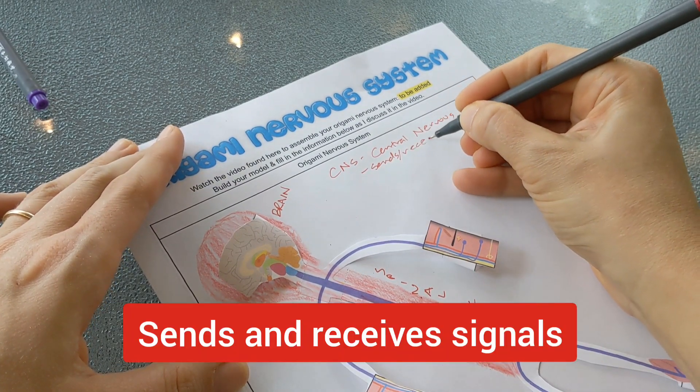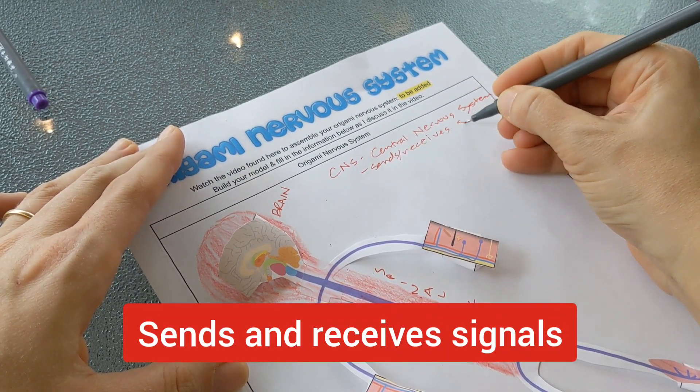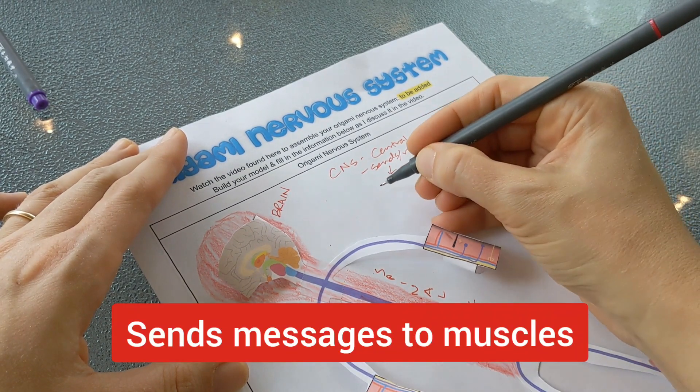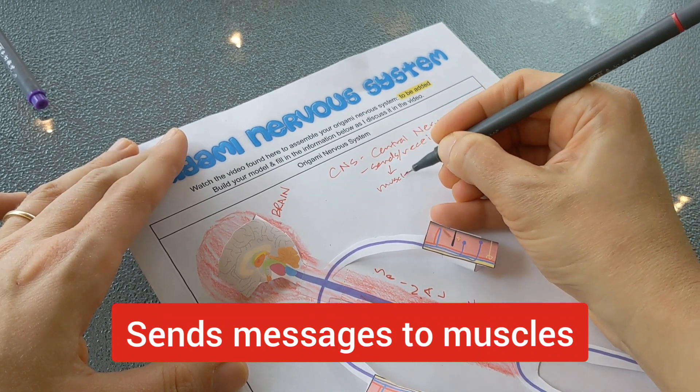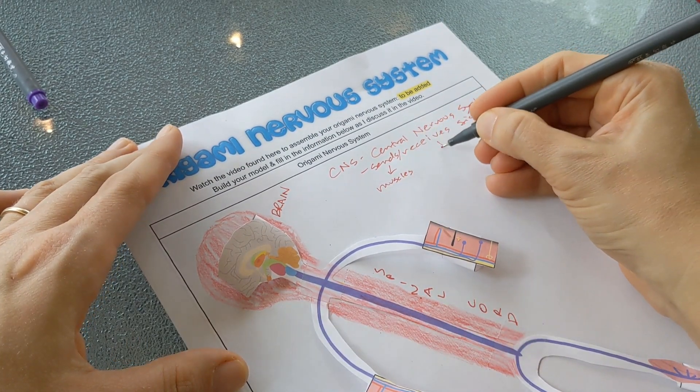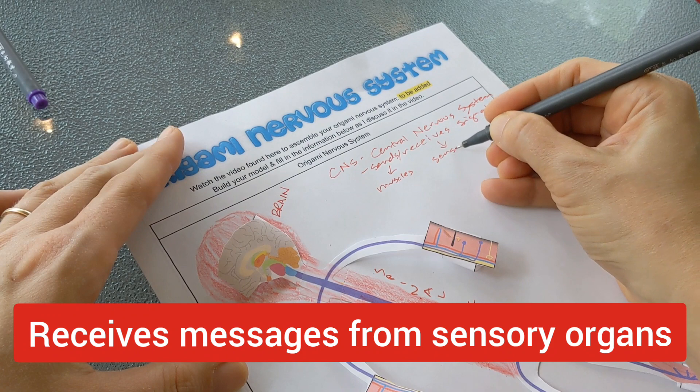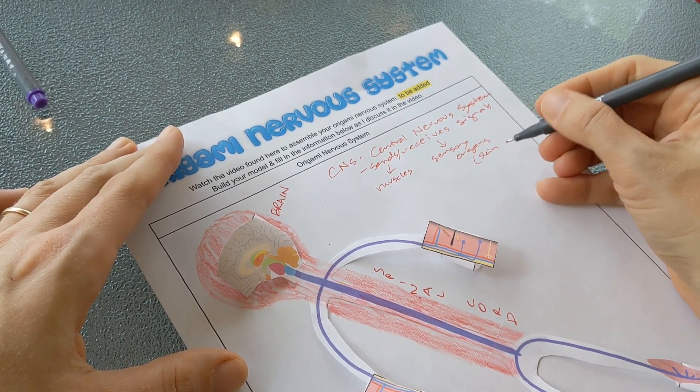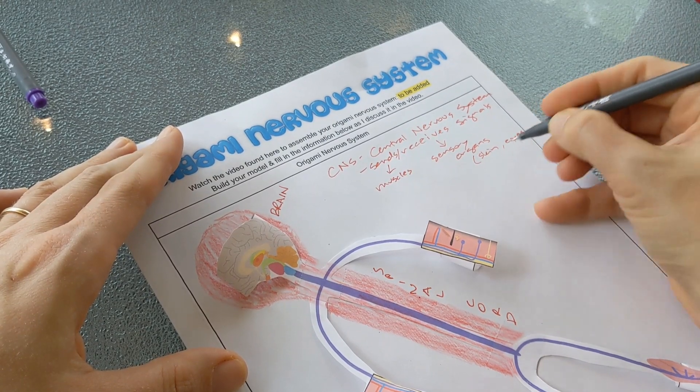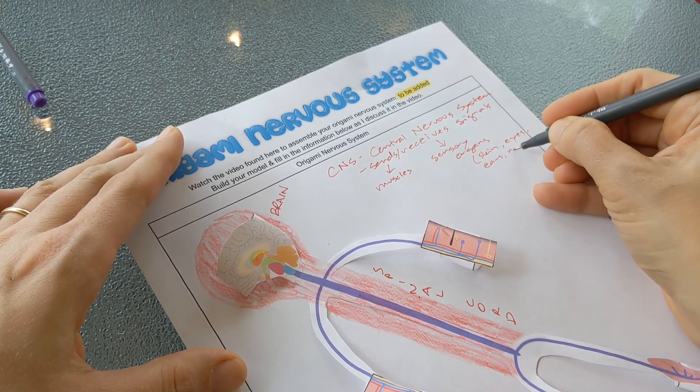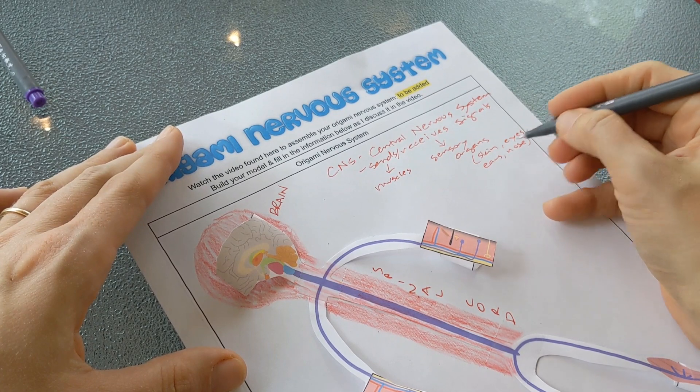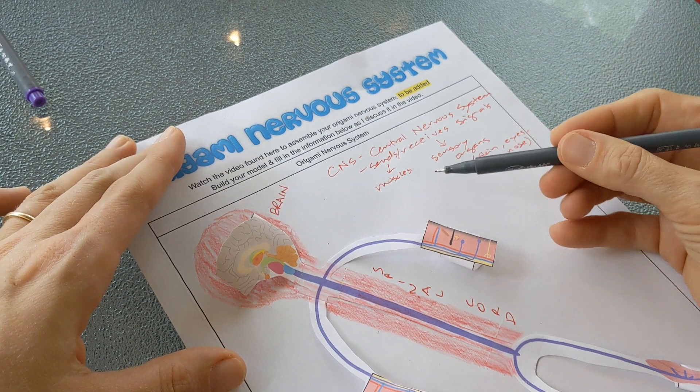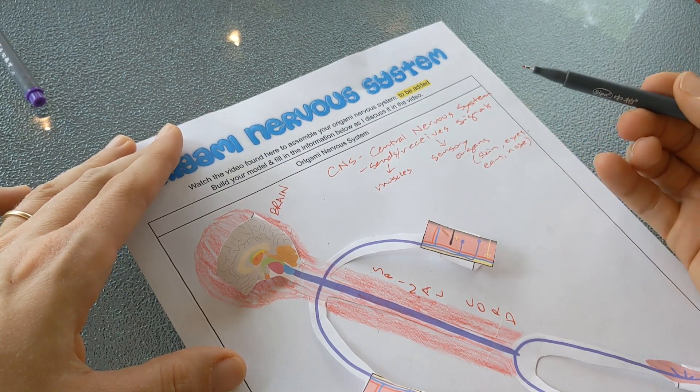It sends and receives signals, messages to the muscles, and it receives messages from sensory organs. These are things like the skin which we can see in the model, the eyes, the ears, the nose. All of our senses are going to go to the central nervous system and all of our muscle movements come from the central nervous system.